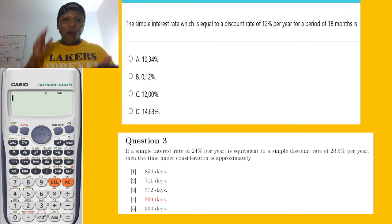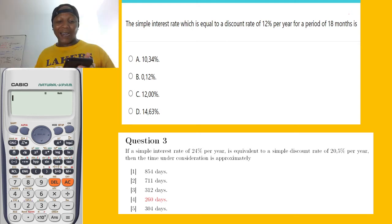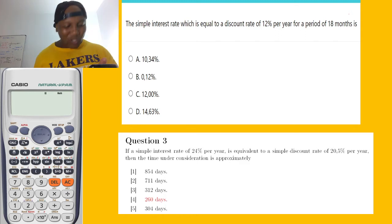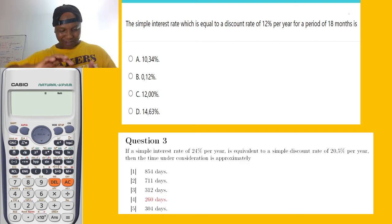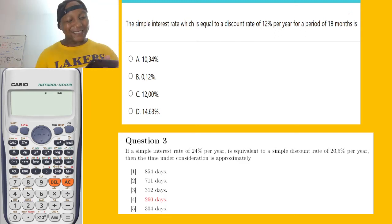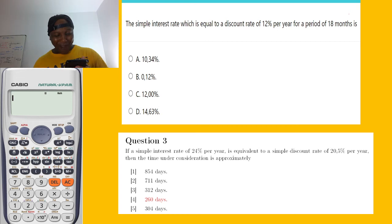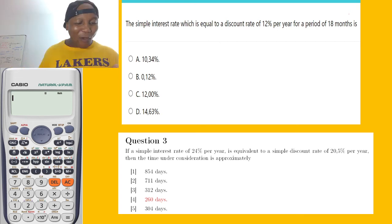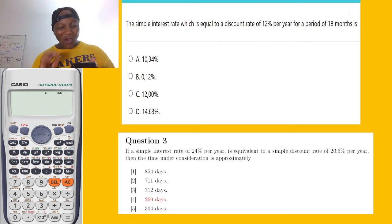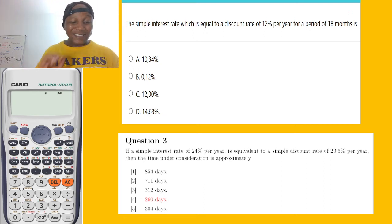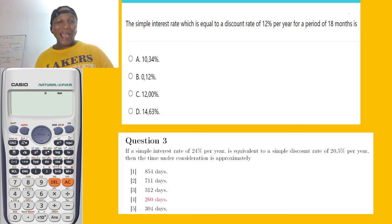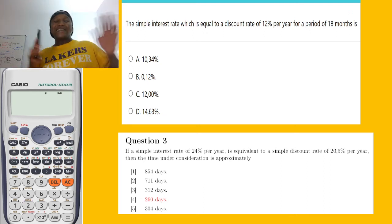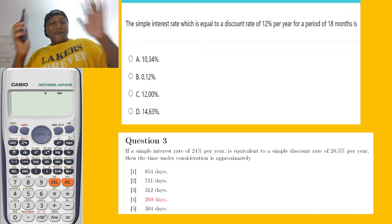Now let's read some comments before we get started. This first comment says: yo Motwana, you don't understand, you make me get 96. Oh my God. There's a lady here, her name is Boy Kanyo. She said: yo Motwana, you know, as long as you're there with me, I know it's the rat.